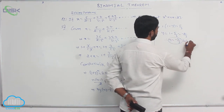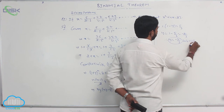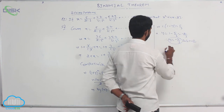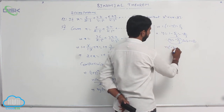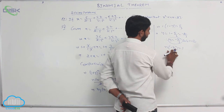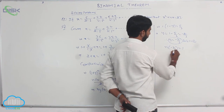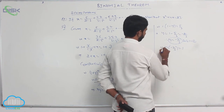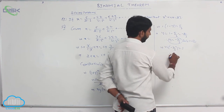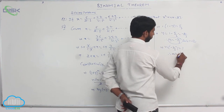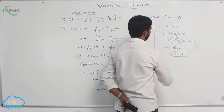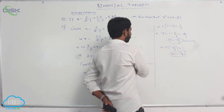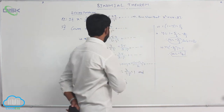Substituting in condition number 1: n times minus 2 by 3 equals 1. Therefore, n equals minus 3 by 2.